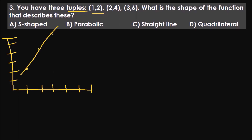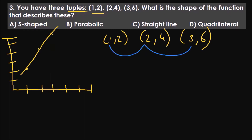Now the shortcut: you have one comma two, two comma four, and three comma six. When you find the difference among the x's and the y's, they should be in arithmetic progression. The x's — 1, 2, 3 — are in AP, and the y's — 2, 4, 6 — are also in AP. So when coordinates are in arithmetic progression, we can be 100% sure the answer is a straight line.